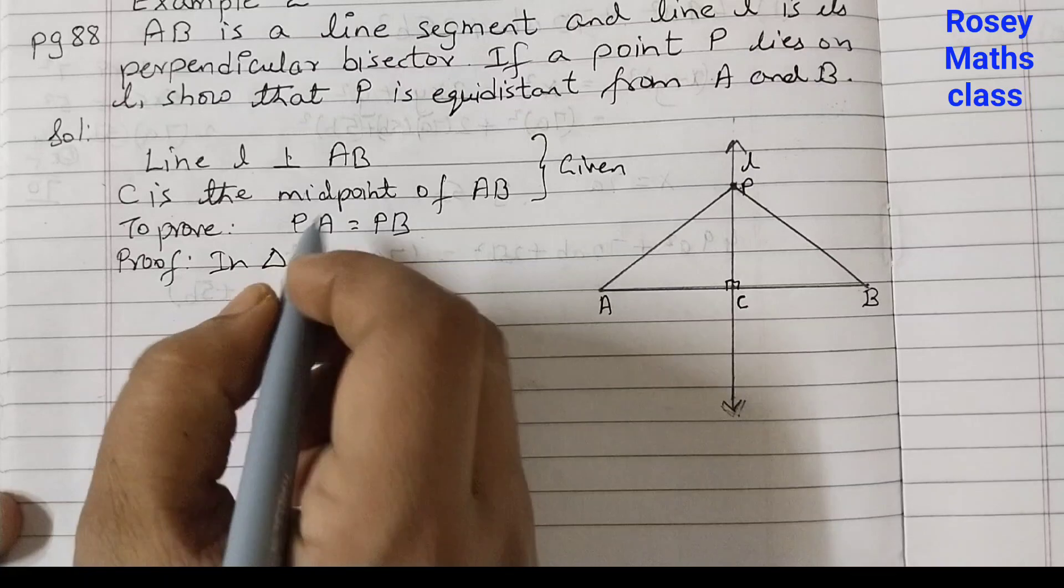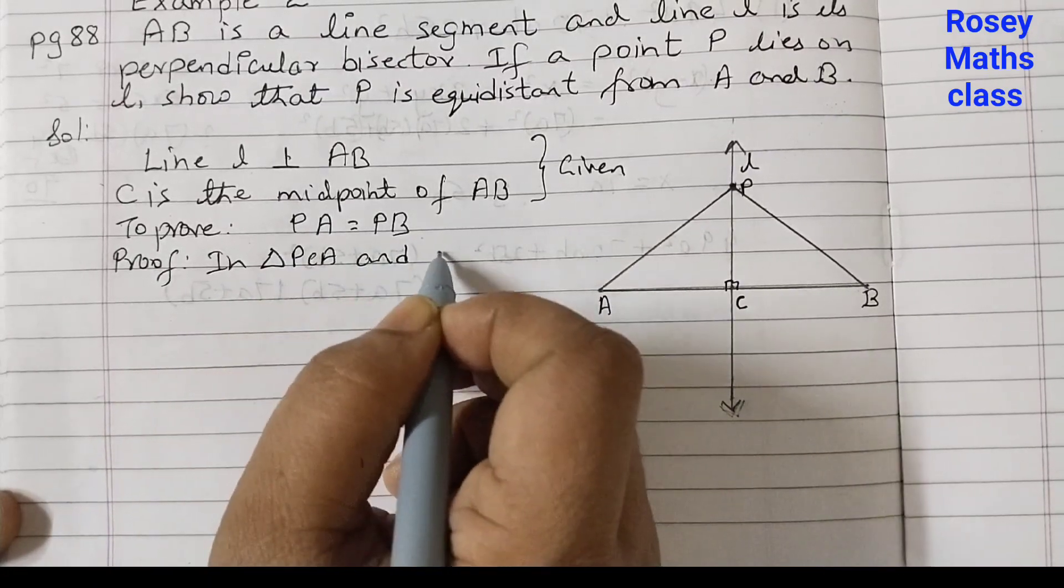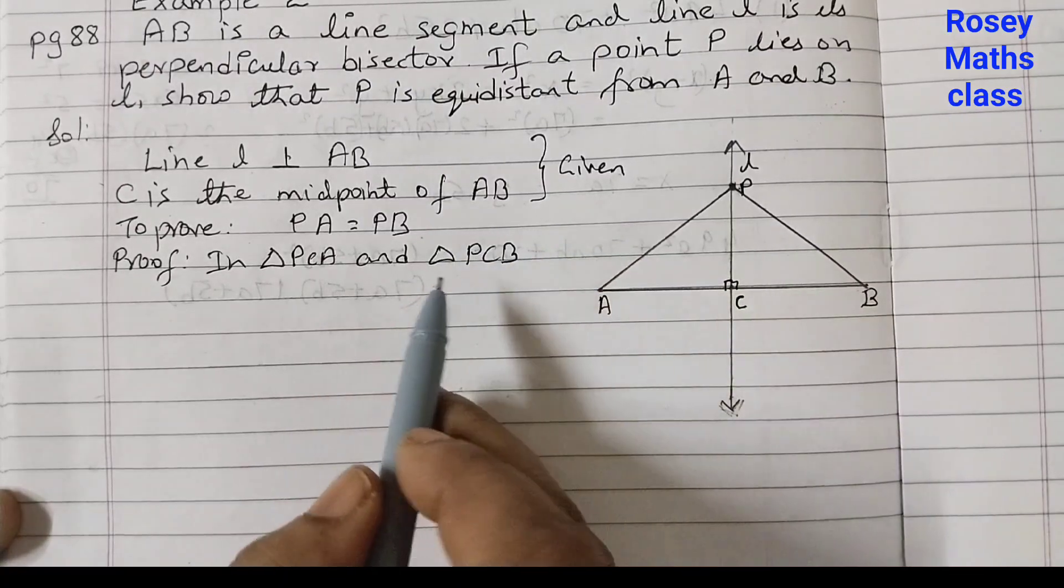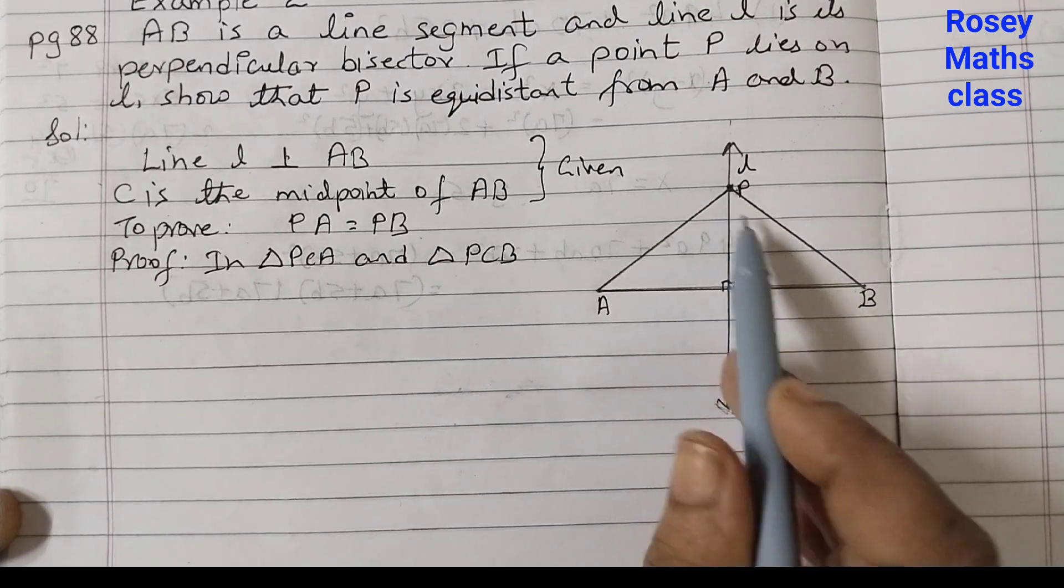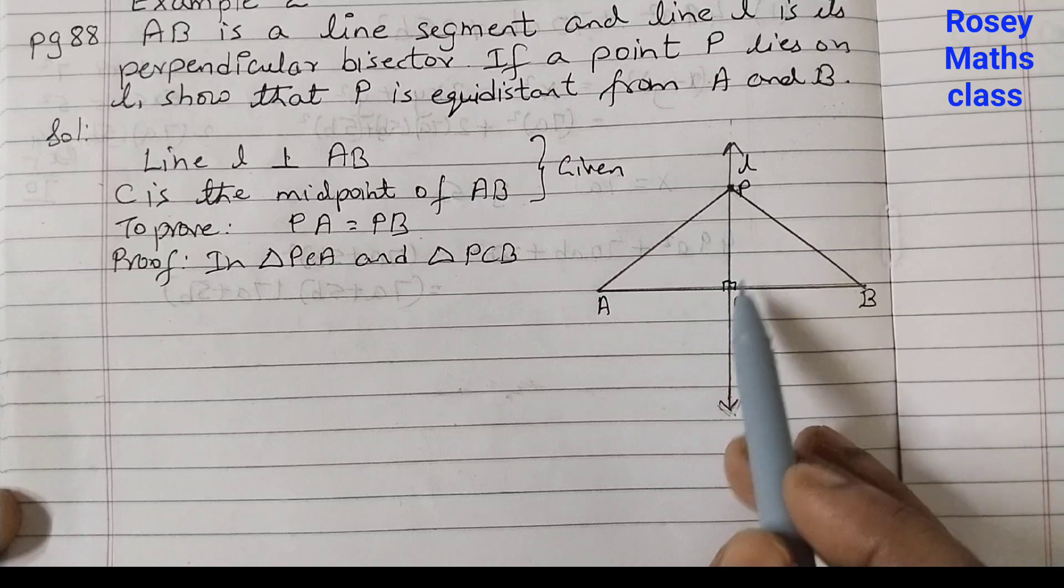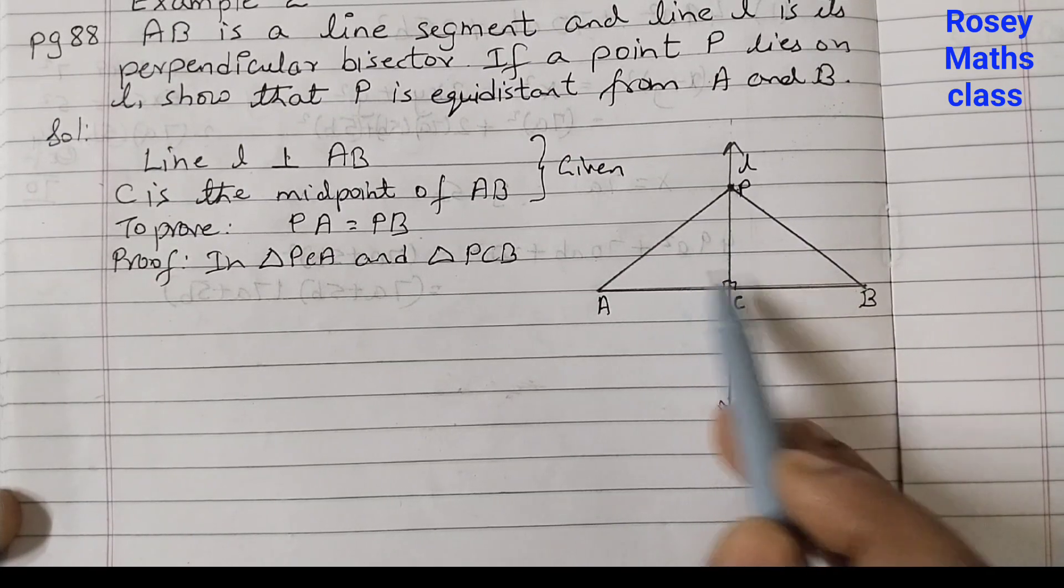In triangle PCA and triangle PCB. This is the symbol of triangle. So PCA this triangle and PCB second triangle. So we are comparing these two triangles.